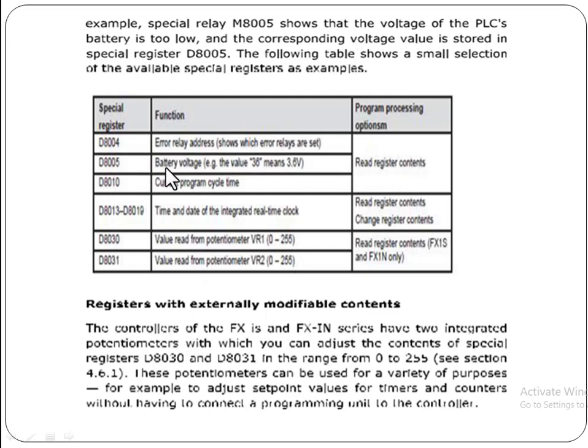D8005 is used for storing the battery voltage. For example, if the value is 36, it means the voltage is 3.6V.